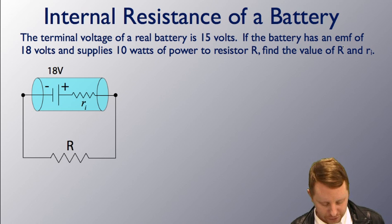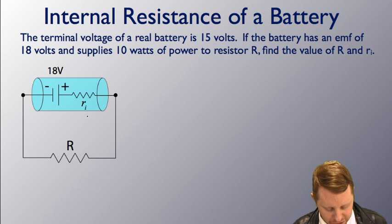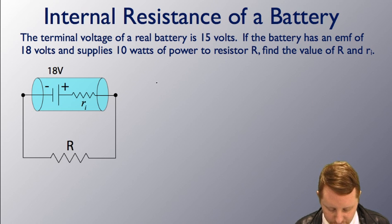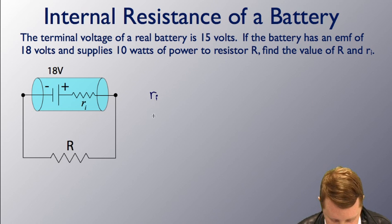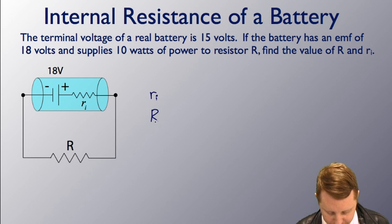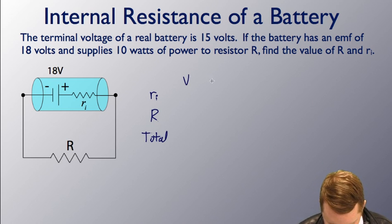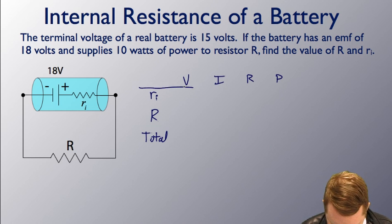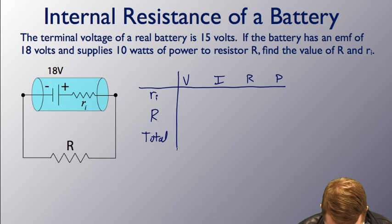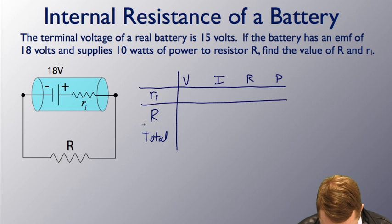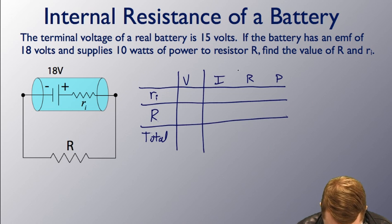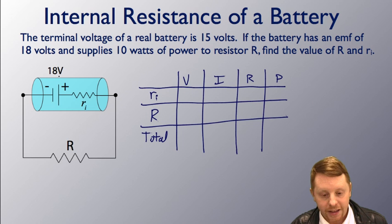The way I'm going to solve this is I'm going to start with the VERP table, because really this is just a simple series circuit. My circuit elements: I've got my internal resistance RI, I've got my resistor capital R, and I'll make a row here for total. And I have my potential, my current, my resistance, and my power dissipated. We'll start by filling in the information that I already know. I know that we've got 18 volts here. That's got to be our total.